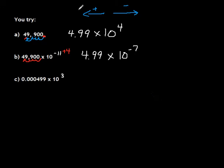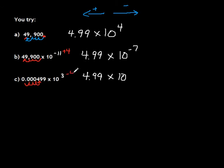And the last one: this time we're moving our decimal point to the right — 4 places. Remember it has to be between the first and second non-zero numbers. So you get 4.99 times 10, and we moved it over 4 to the right. The right is negative, so we're going to subtract 4, and that would be negative 1. Hopefully you got that, and if not, we'll go over it in class. That's it for Lesson 74.